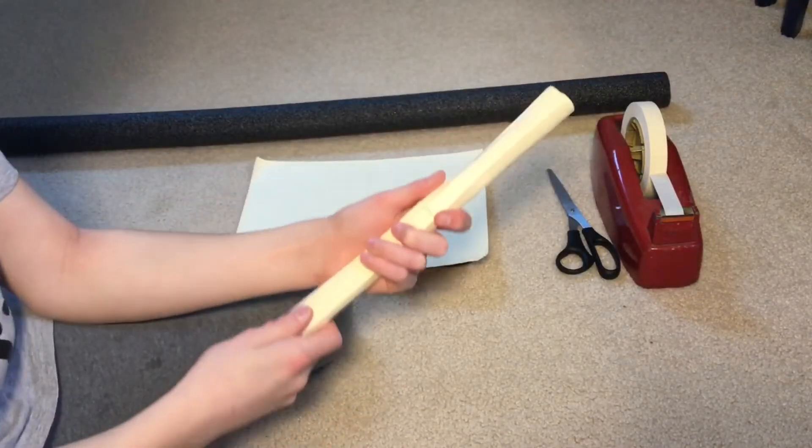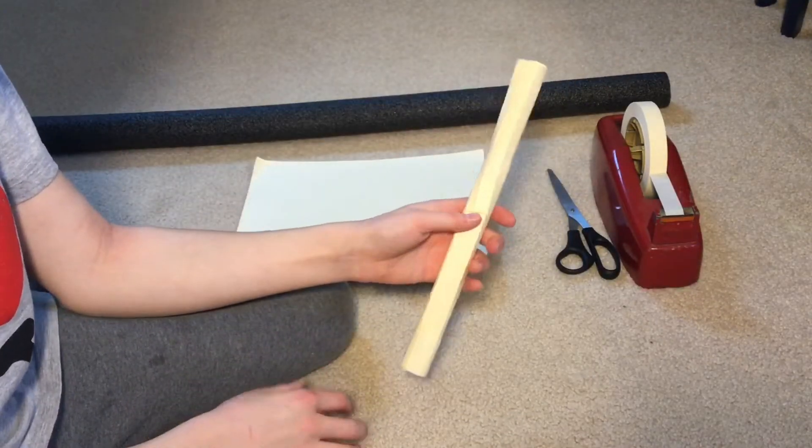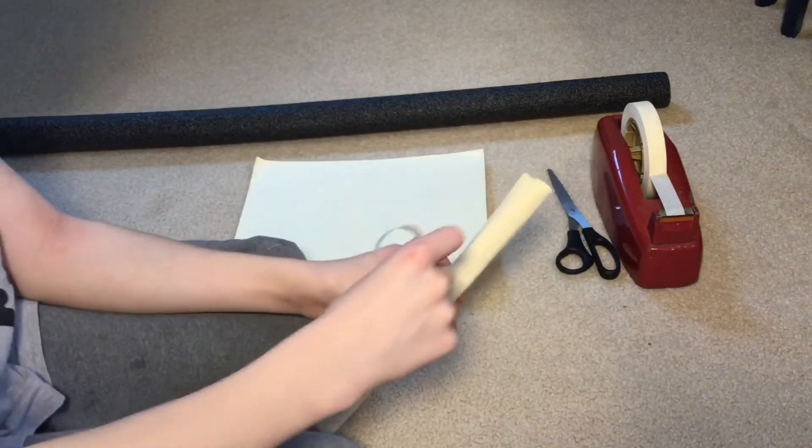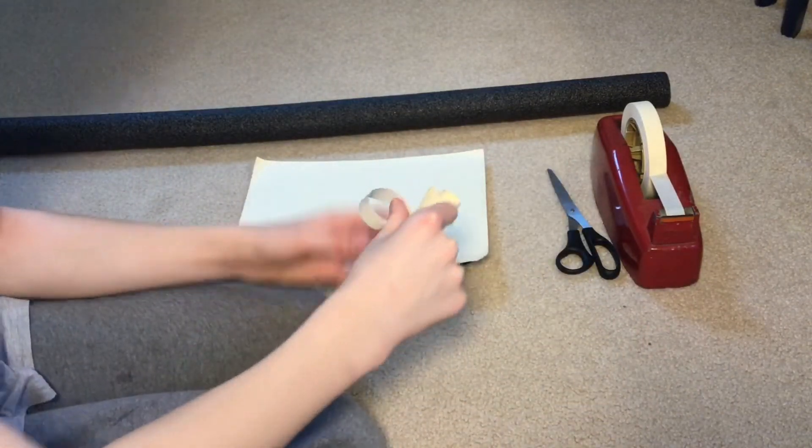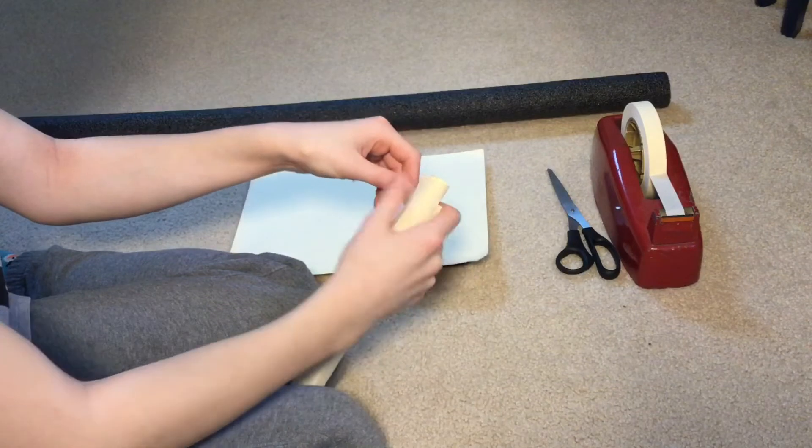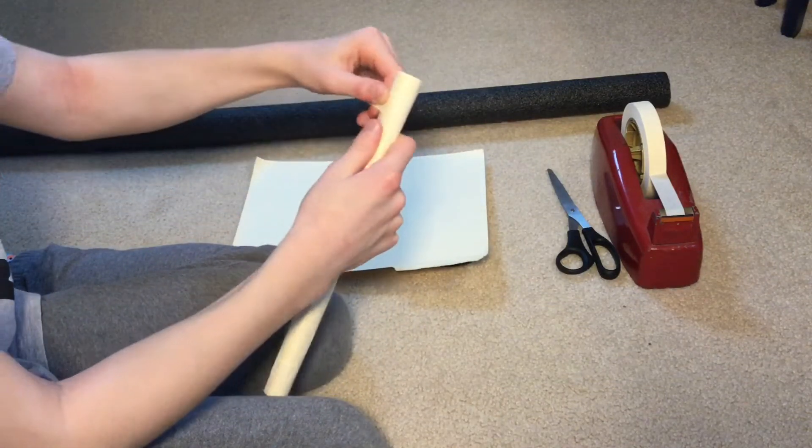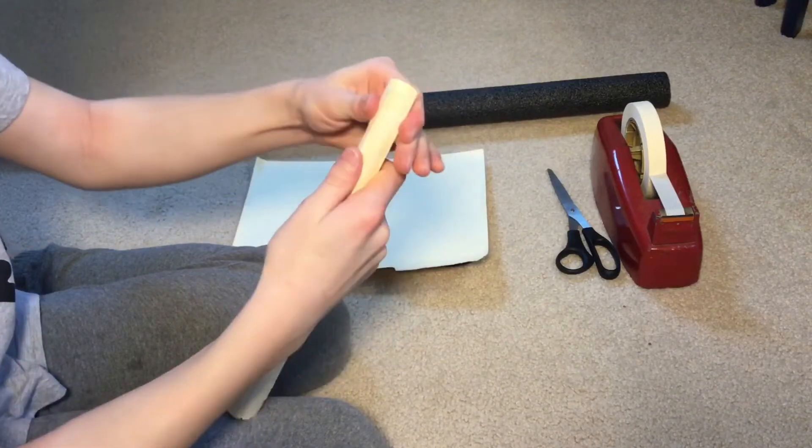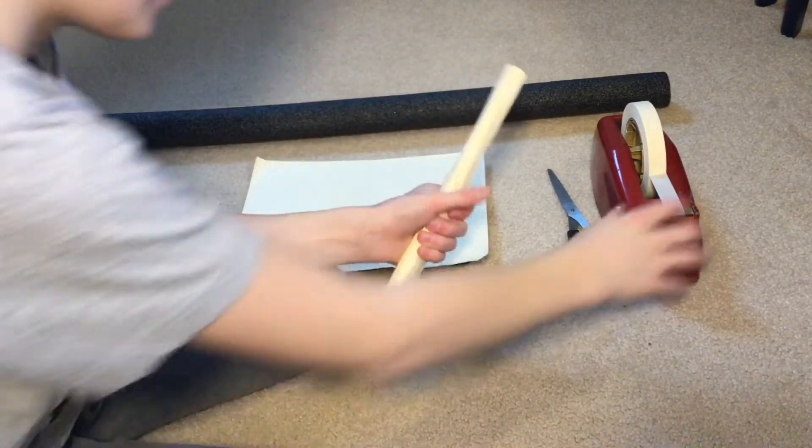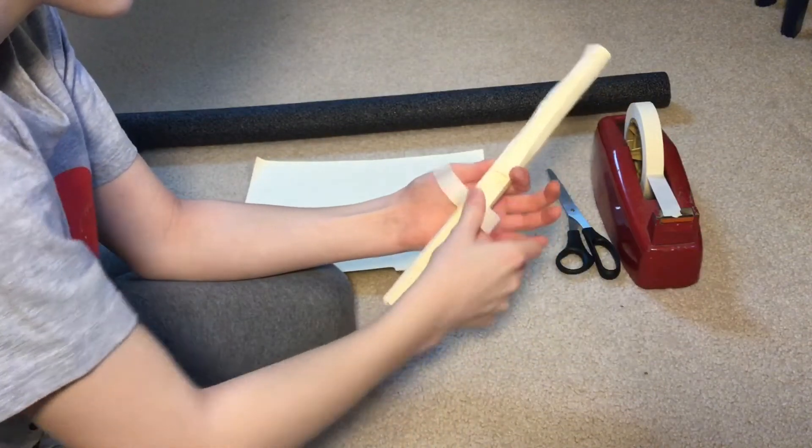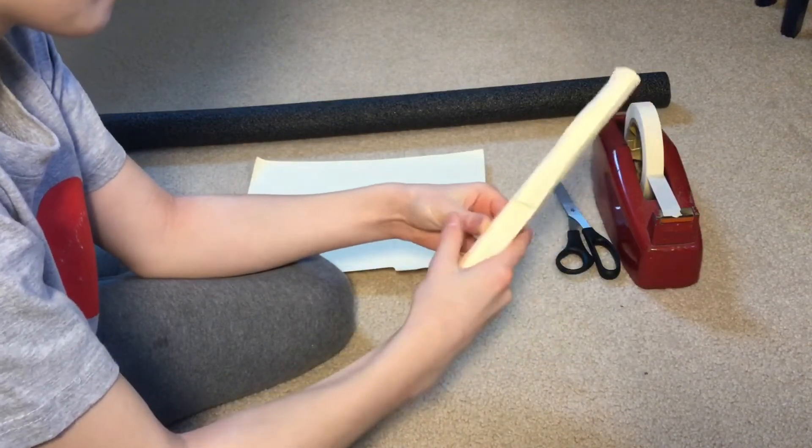So once you have it all rolled up, we already put on a piece of tape. But basically you just want to get a piece of tape that's long enough to go all the way around. Then you just put it here and wrap it all the way around. If it doesn't go all the way around, sometimes it doesn't stick and that can cause some problems. Make sure you have enough tape to make it secure.